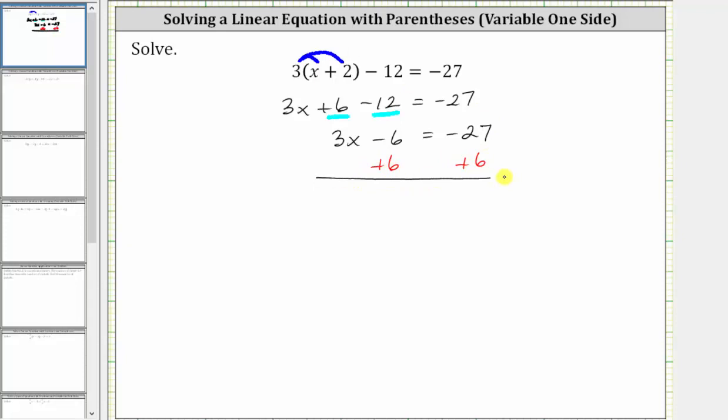Simplifying, negative six plus six is zero, which is why we added six to both sides. The left side simplifies to three x. We have three x equals negative 27 plus six is equal to negative 21.